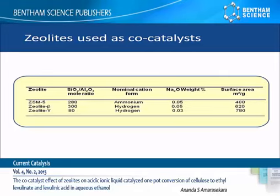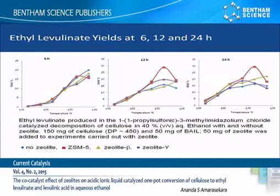As results of these experiments, ethyl levulinate yields produced at different temperatures and times are shown here. Blue lines are for samples without any co-catalysts, red lines are for ZSM-5 co-catalyst added samples, green for zeolite beta, and purple for zeolite Y added samples. At 6 hours, ethyl levulinate yields are similar in all samples.